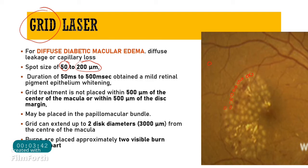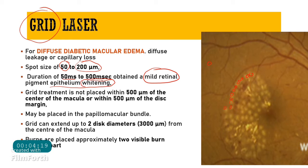In grid laser therapy, the spot size is 50 to 200 micrometers — you can increase the size up to 200 micrometers based on the extent of retinal thickening, but never exceed 200 micrometers. The duration is 50 to 500 milliseconds. The endpoint is a mild retinal pigmentation burn — just a mild whitening; do not aim for dense white or intense burns.